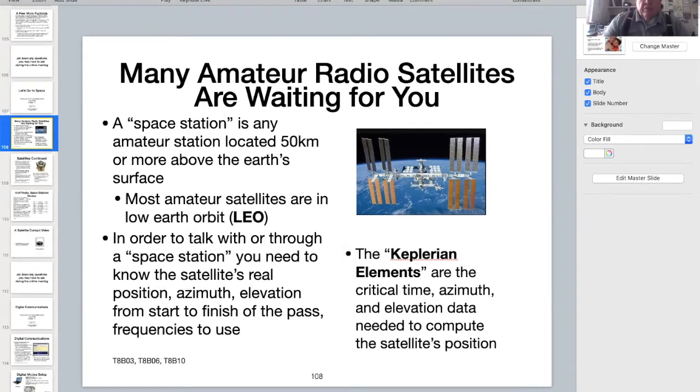Most of the amateur radio satellites are in low earth orbit, circling the globe about every 90 minutes. One satellite has been in moon orbit for several months before crashing onto the moon's surface. Another is in geosynchronous orbit serving Africa and India, and there are more geosynchronous satellites coming.